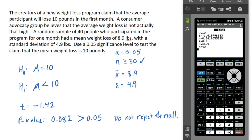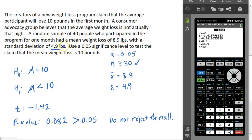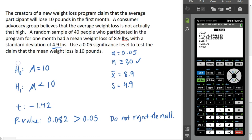Our sample mean was less than 10 pounds, but the question is whether that sample mean is statistically significant enough for us to reject the claim that the average participant will lose 10 pounds. According to our hypothesis test, the answer is no — we do not have significant enough evidence to say the claim is untrue. Notice this is a pretty large standard deviation of 4.9 pounds, which means if we took another sample of 40 people, it's entirely plausible we'd find a mean weight loss of more than 10 pounds. With this sample size and that large a standard deviation, we would need a more significant difference from 10 in order to reject the hypothesis.